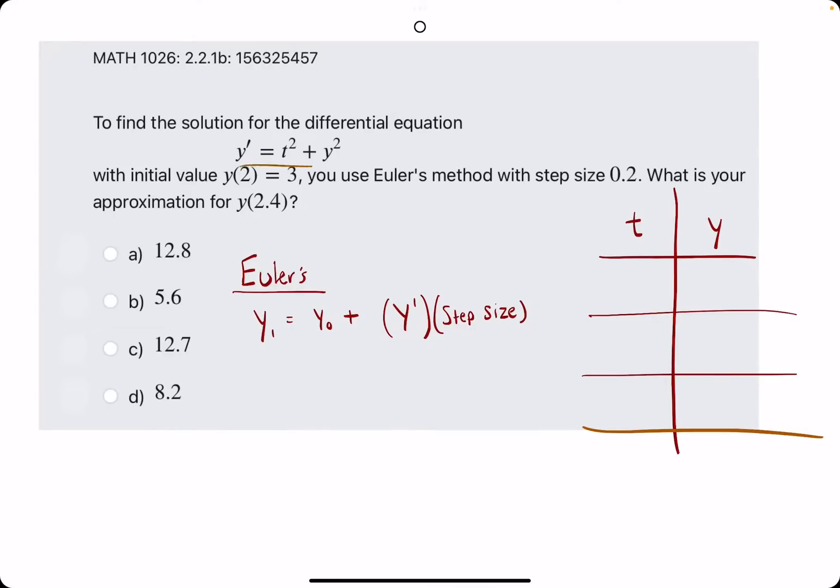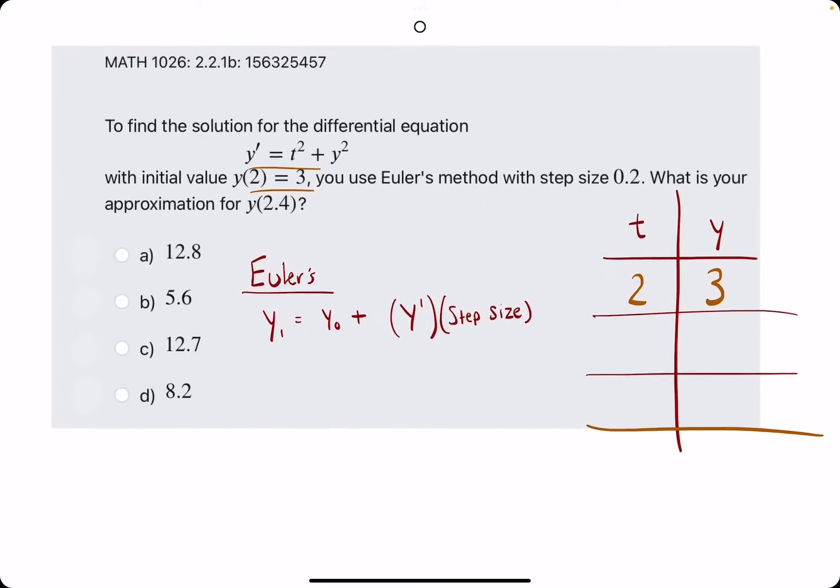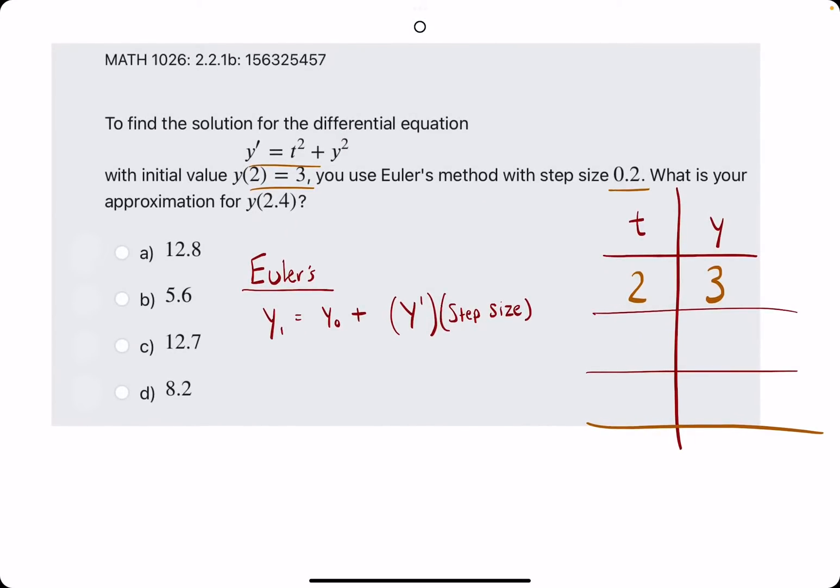Alright, so we're given the differential equation and the initial condition. When t is 2, our y value is 3. So the input is t, that is 2. Output is y, so 3. Step size is 0.2, so we'll go up by 0.2 each time, so 2.2 and 2.4, and we are approximating the y value at 2.4. That's the goal.